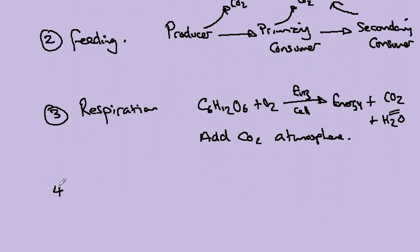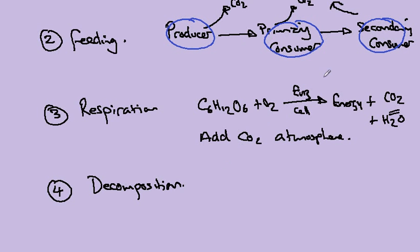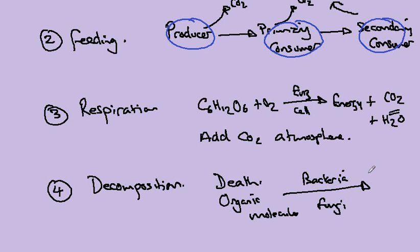The fourth process to look at in the cycling of carbon is decomposition. All of the organisms up here in the food chain - the producers, the primary consumers, the secondary consumers, the tertiary consumers if they exist - eventually there will be death of these organisms, and the organic molecules that remain are broken down by the decomposer organisms, which includes the bacteria and the fungi. And this will result in the release of carbon dioxide back to the atmosphere.